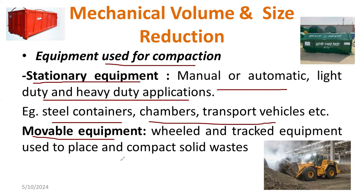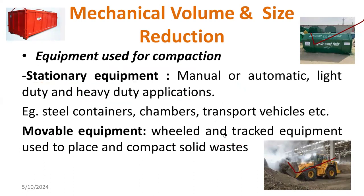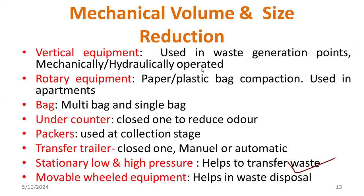For movable equipment, this is our stationary equipment and we have the movable equipment. Wheel and wheel retractor equipment are one category that comes under movable equipment. These are the two types of equipment used for compaction — one is stationary type, the other is movable equipment.